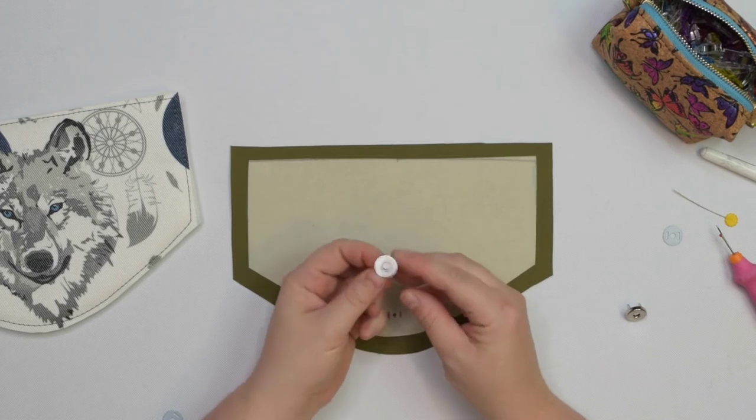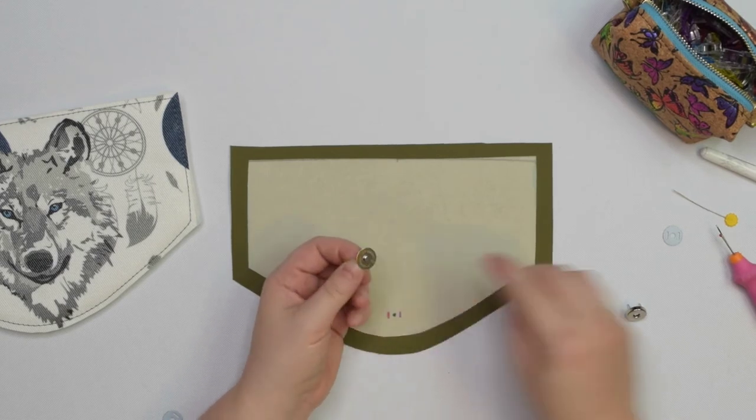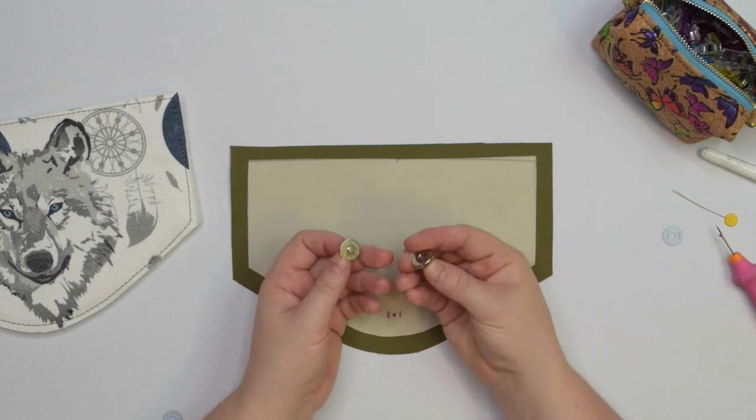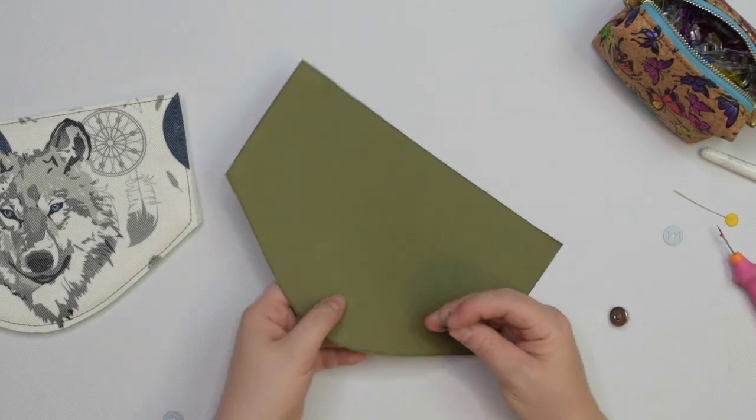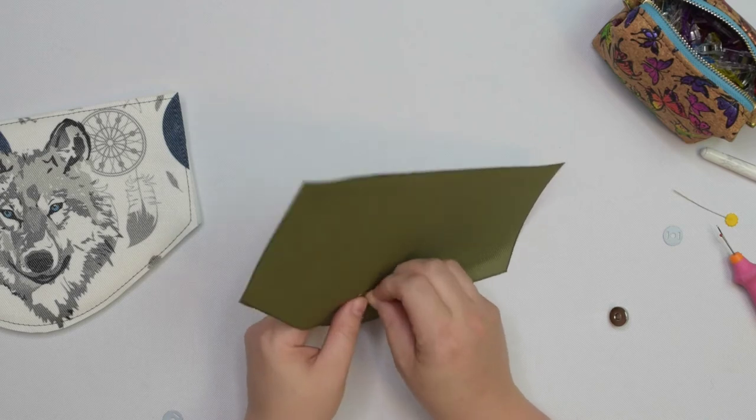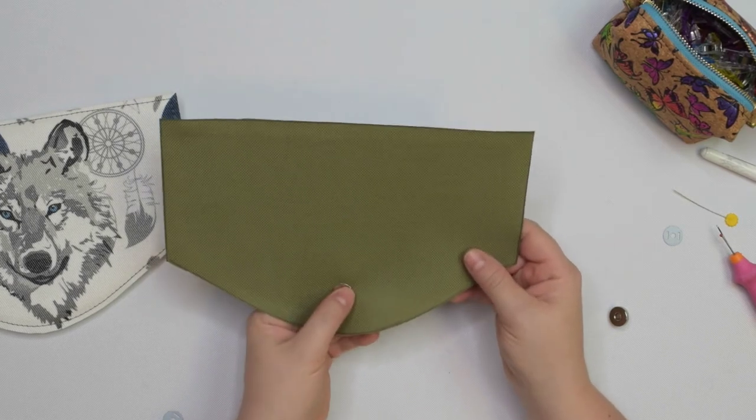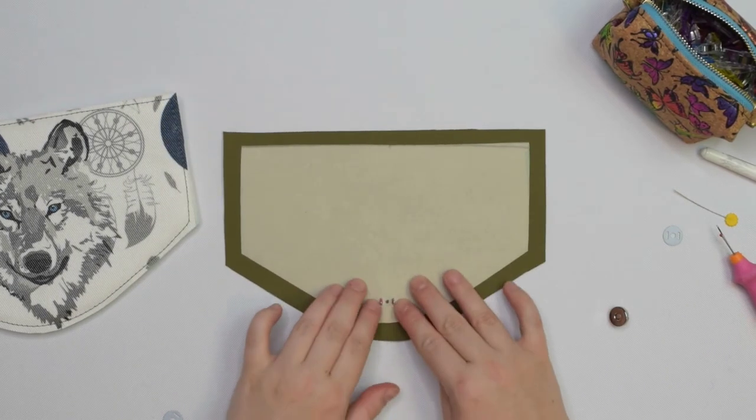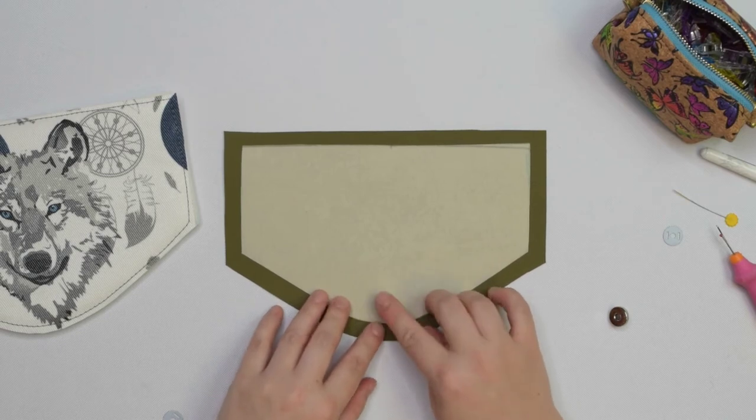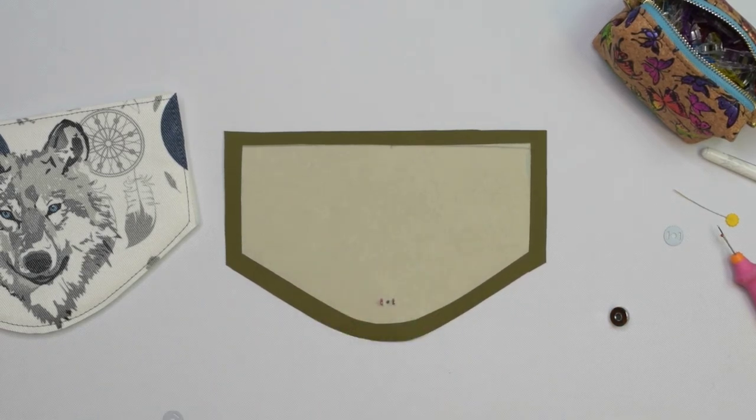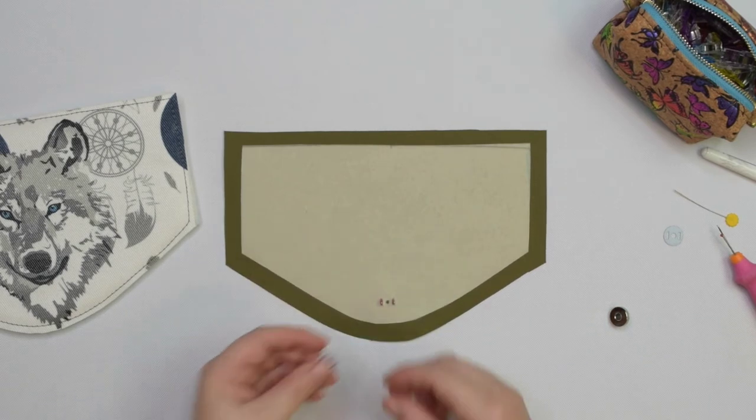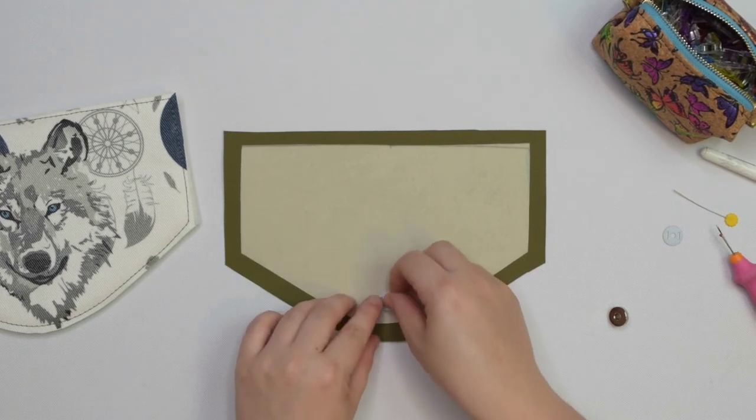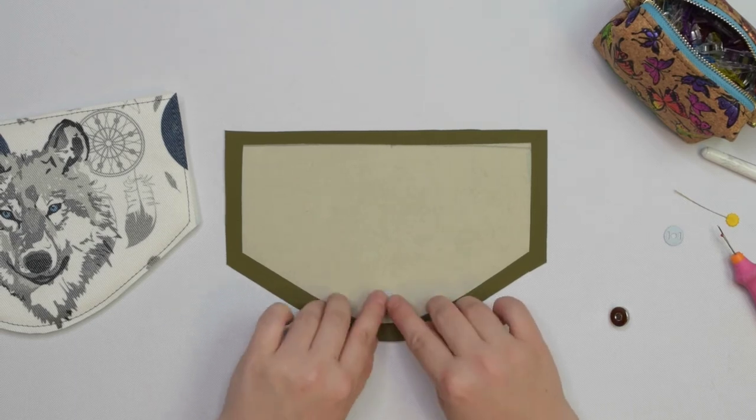We are going to install the male part of the snap closure, the one with the little bump. If you compare both parts you should be able to recognize it right away. Grab your lining flap and insert the prongs into those slits from the right side of the fabric. Sometimes I like to add a small piece of stabilizer before I insert the washer, but my fabric is stable enough so I can insert the washer without it. Then you can bend the prongs in opposite directions.